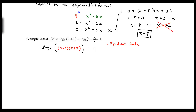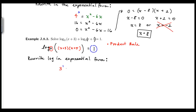Applying the product rule gives log base 3 of (x plus 3)(x plus 5) equal to 1. Just like the previous example, I'll rewrite this in exponential form — I do this when I don't have two logs on each side. Base 3 to the exponent 1 equals (x plus 3)(x plus 5), which gives 3 equals x squared plus 8x plus 15.